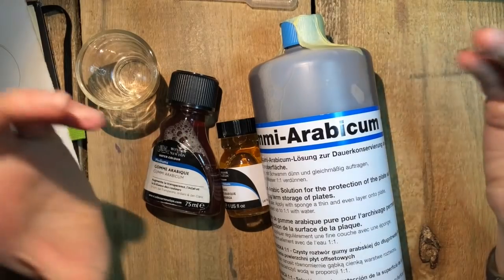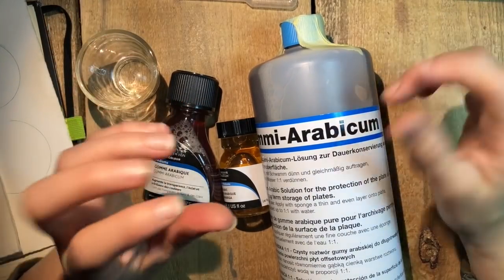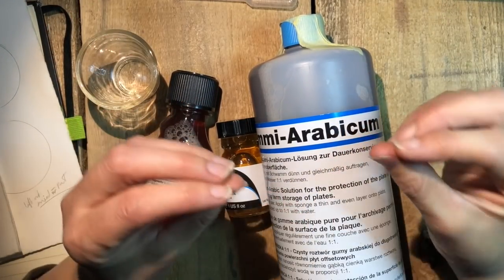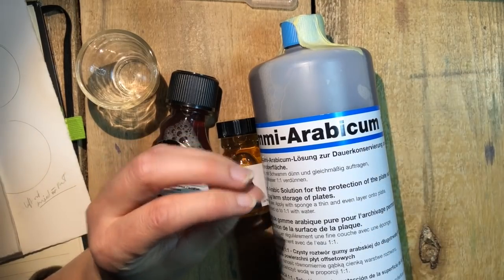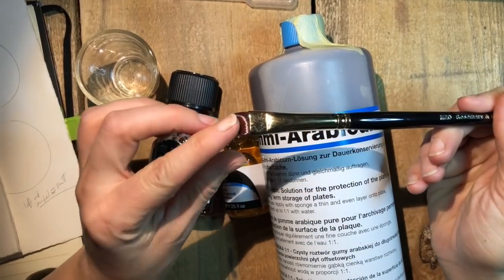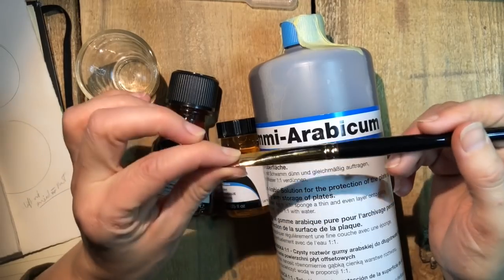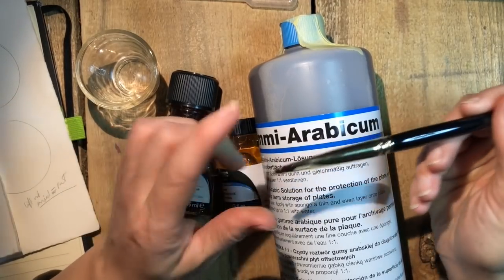Gum arabic is, like I said, the binder on watercolor paint. It's also that hard stuff that comes when you buy brand new paint brushes. If you find that the ends are all crispy and stiff, that's because they've dipped them in gum arabic.